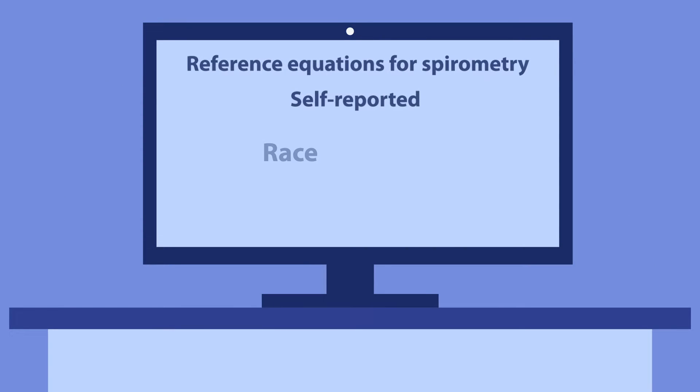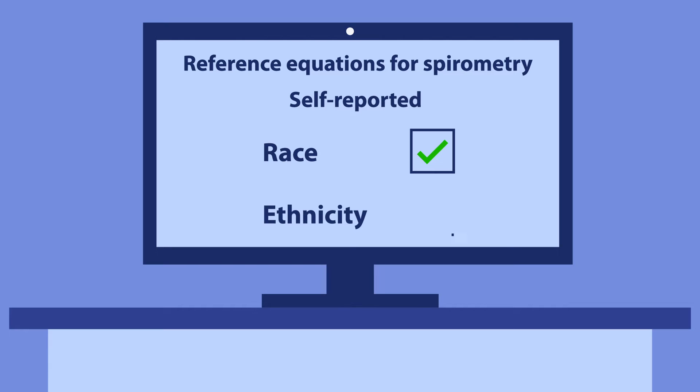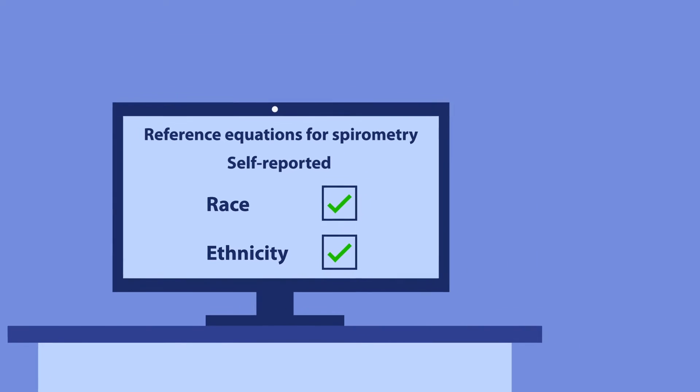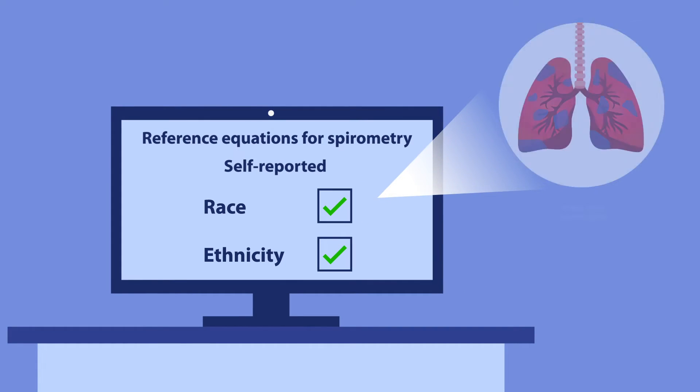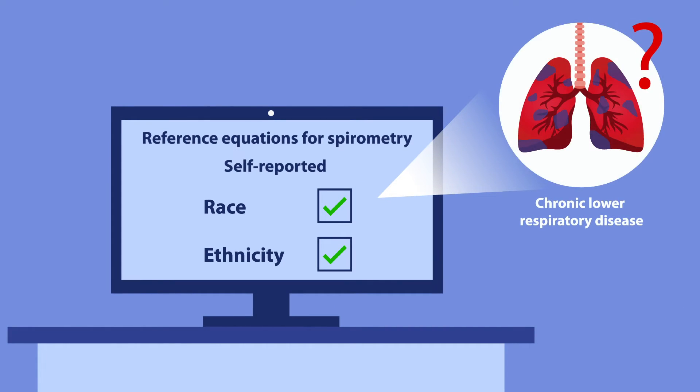The goal of this work was to answer the question: does the inclusion of race and ethnicity in spirometry reference equations improve the prediction of chronic lower respiratory disease?